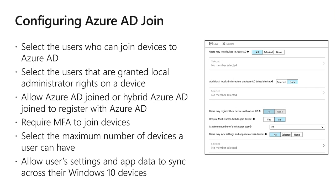Microsoft 365 also includes this capability since it combines Office 365, EMS, and Windows 10. Third, users may register their devices with Azure AD — if you select none, devices are not allowed to register when they are not Azure AD joined or hybrid Azure AD joined. Enrollment with Microsoft Intune or MDM for Office 365 requires registration, so if you've configured either of these services, the none option is not available. And fourth, require MFA to join the device — you can choose whether users must provide an additional authentication factor such as text or email. The default is no, but we recommend enabling multi-factor authentication when registering a device.